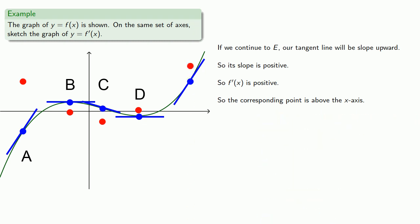Now we just have a couple of points on the graph of y equals f prime of x. For now, let's just connect the dots. And that gives us the sketch of the graph of y equals f prime of x.